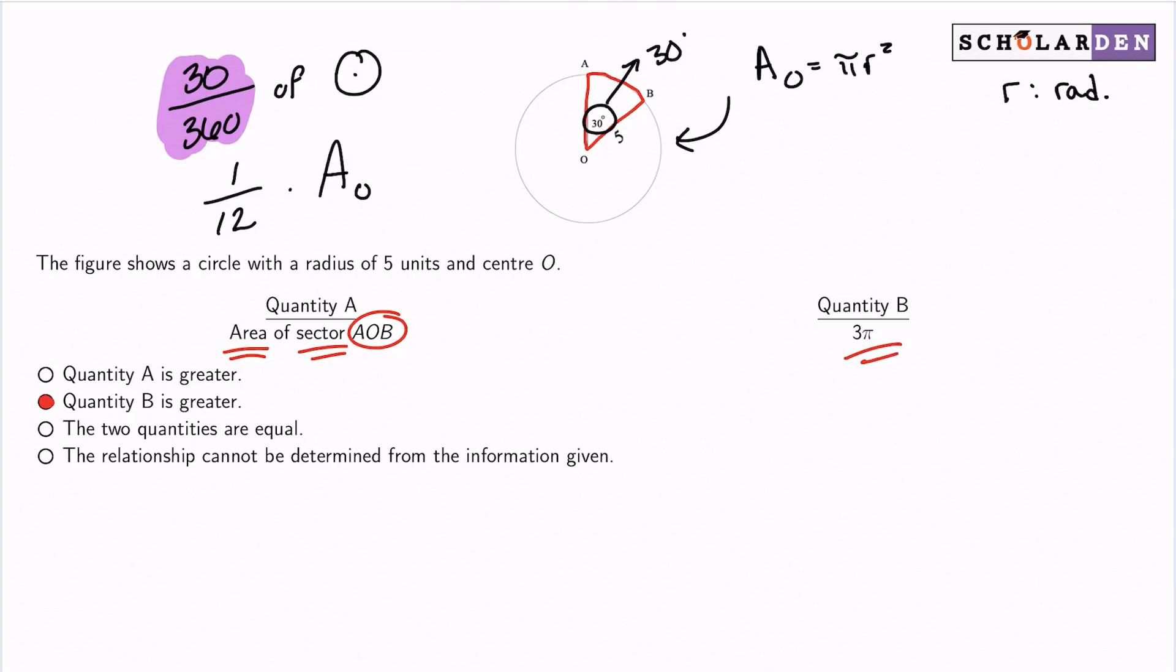So what's the area of the circle? Well, the radius is 5, so we're good to go. The area of the circle will be π times 5 squared, or 25π.